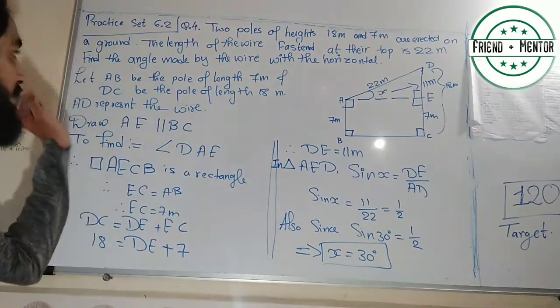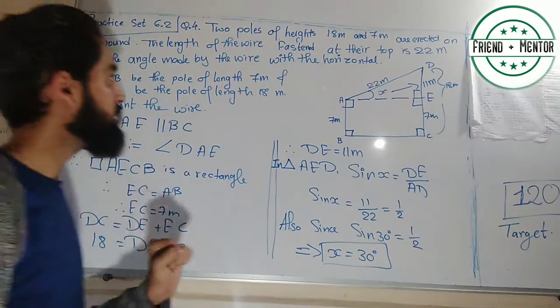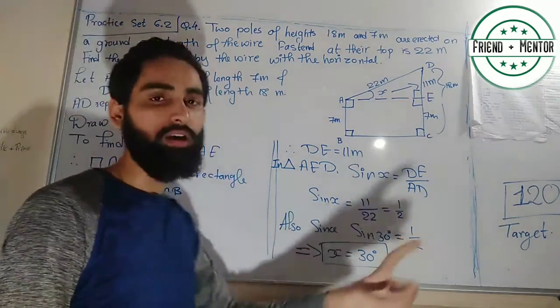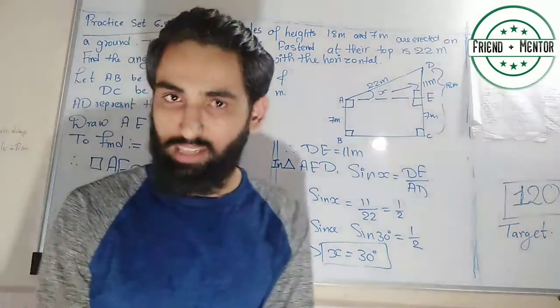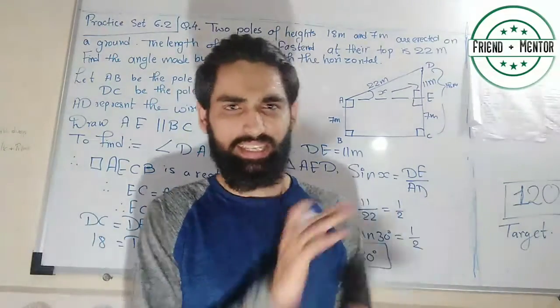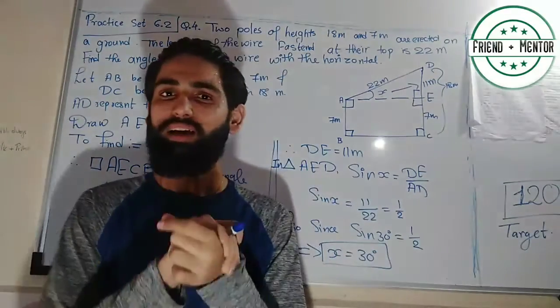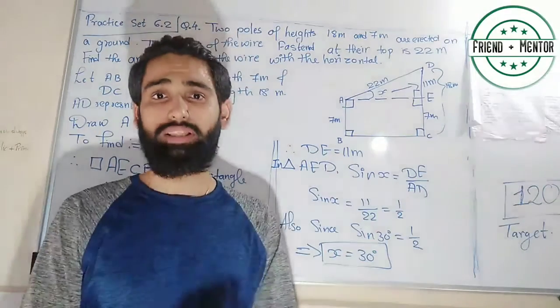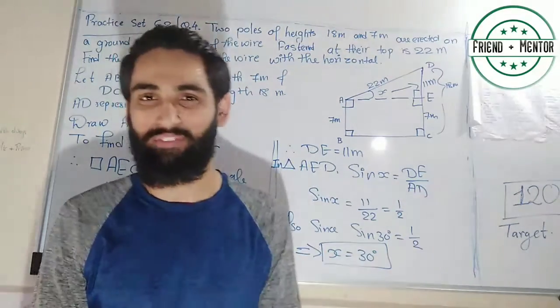So we write: the angle between the wire and the horizontal is 30 degrees. This is how question number 4 is solved. Now let us look at question number 5.